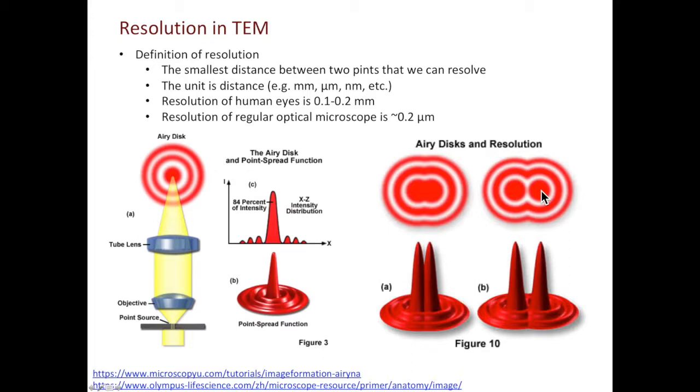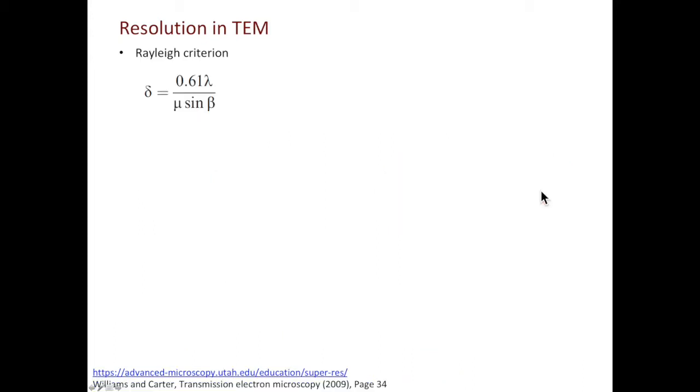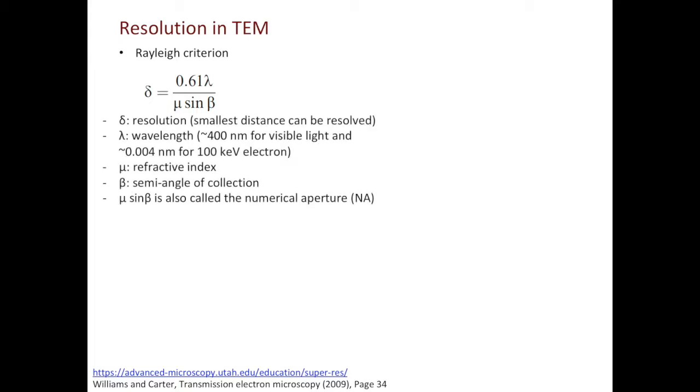Taking a step forward, how can we quantify resolution? There are many criteria we can use. Here, we'll focus on the Rayleigh criterion. According to the Rayleigh criterion, delta is equal to 0.61 lambda divided by mu sine beta. Looking at the parameters one by one, delta is the resolution, which is the smallest distance can be resolved. Lambda is the wavelength. Lambda is the wavelength for the beam we use to form images. The wavelength of electron beam in TEM is much, much less than visible light. And this gives the superior resolving power of TEM compared to optical microscope. Mu is the refractive index. Beta is the semi-angle of collection. Mu sine beta as a whole is also called the numerical aperture.